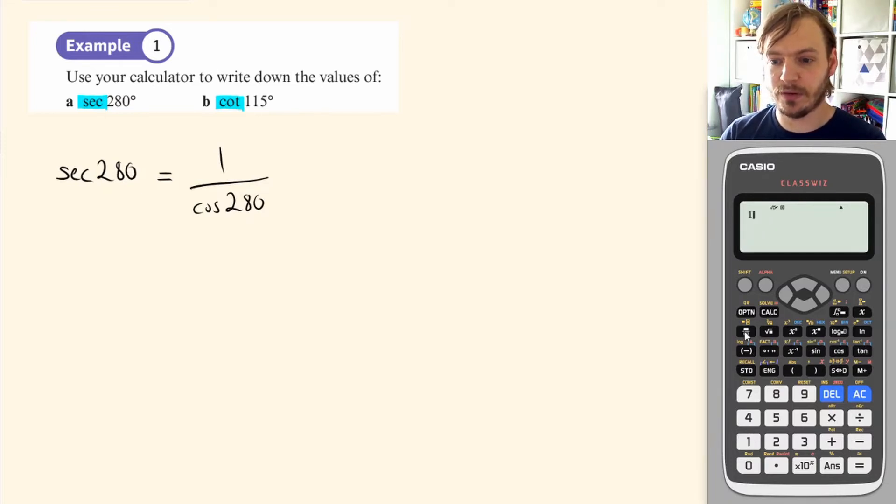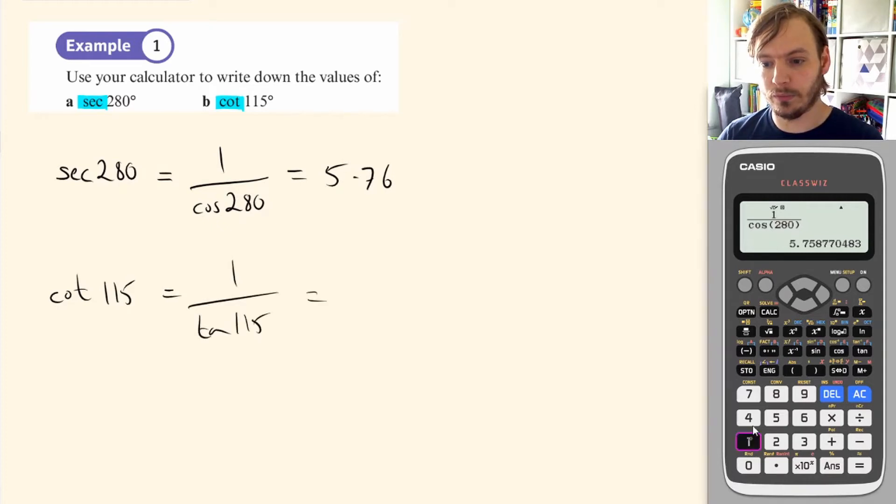And I press equals and I get an answer of 5.76. And then instead of doing cot of 115, I'm going to write one over tan of 115. So 1 over tan 115. And I'm going to get negative 0.466.